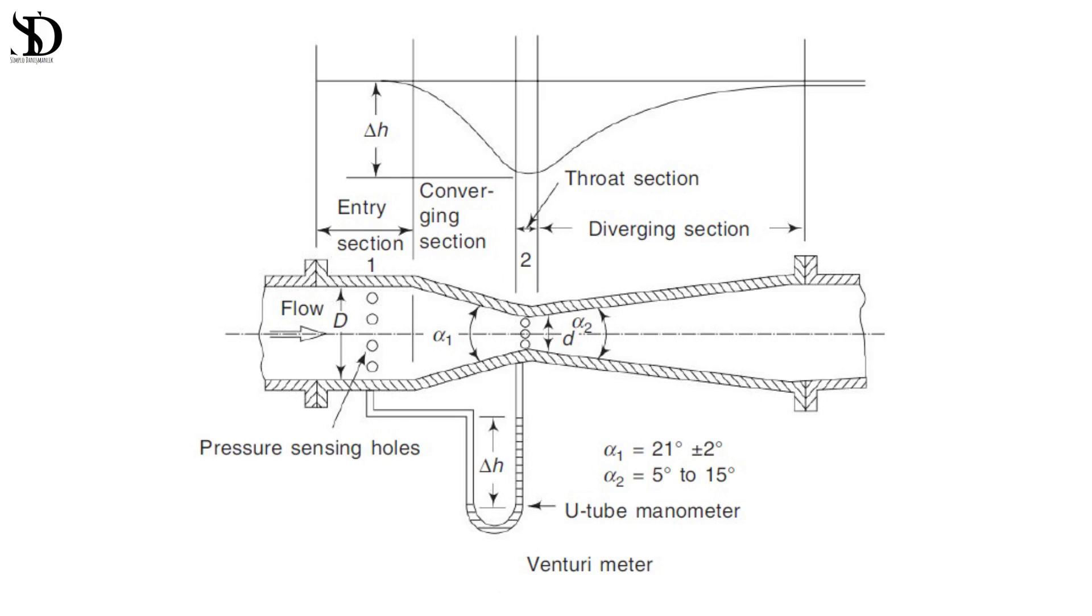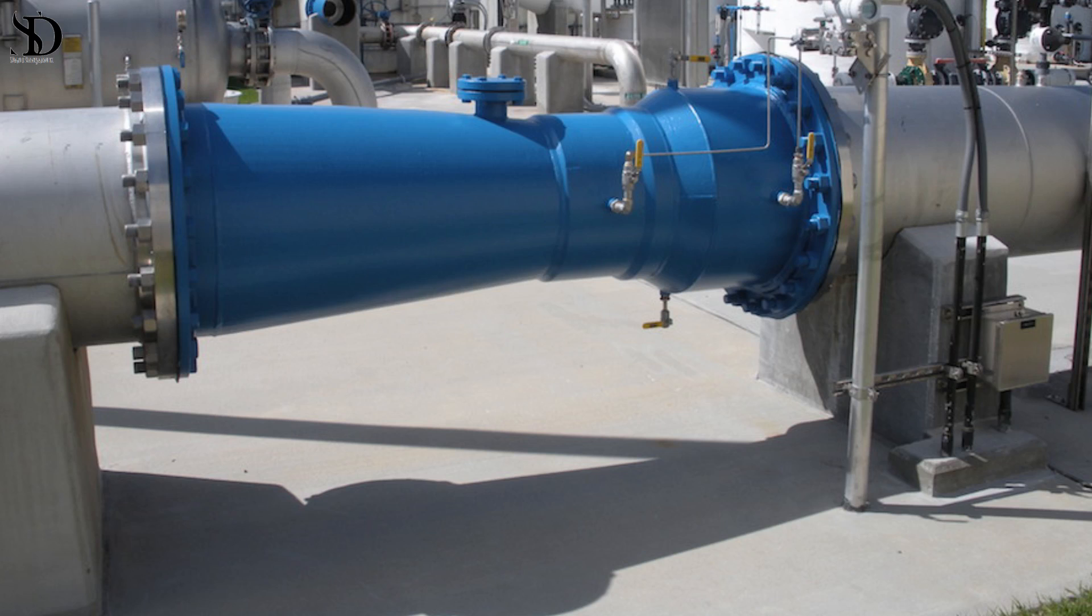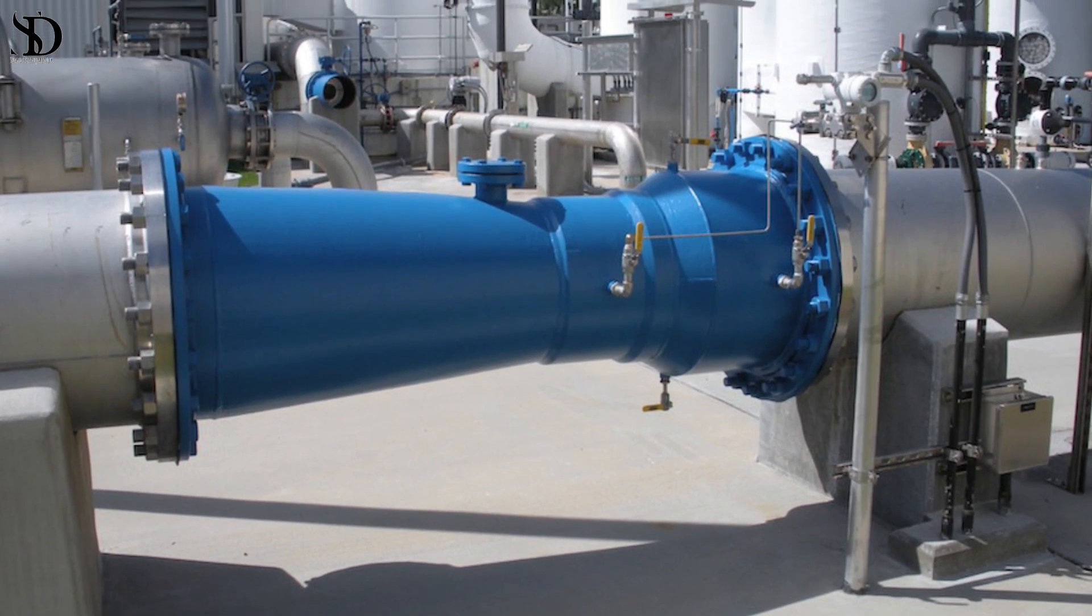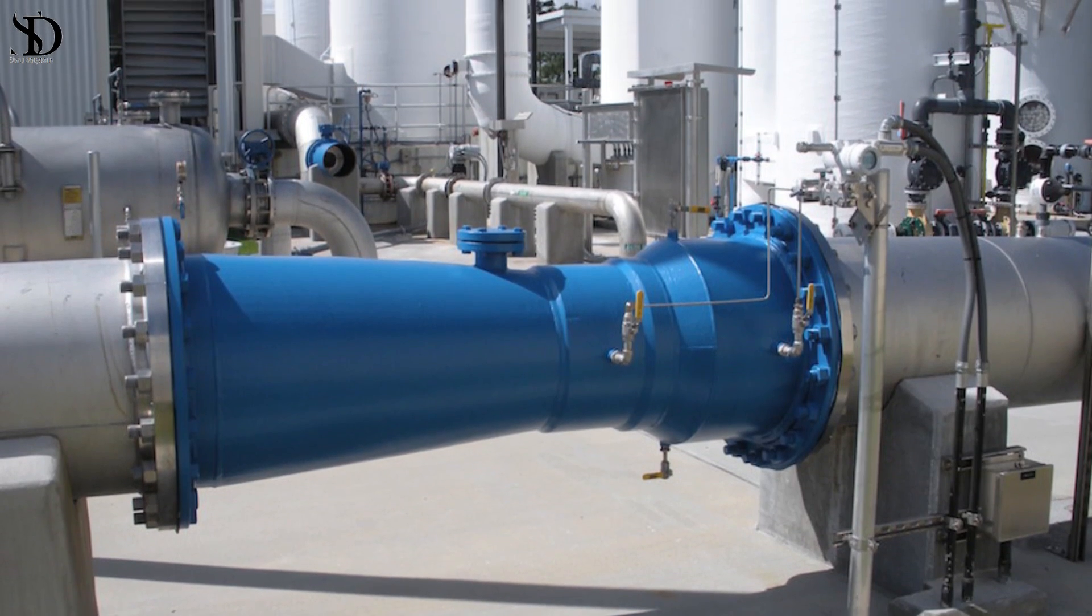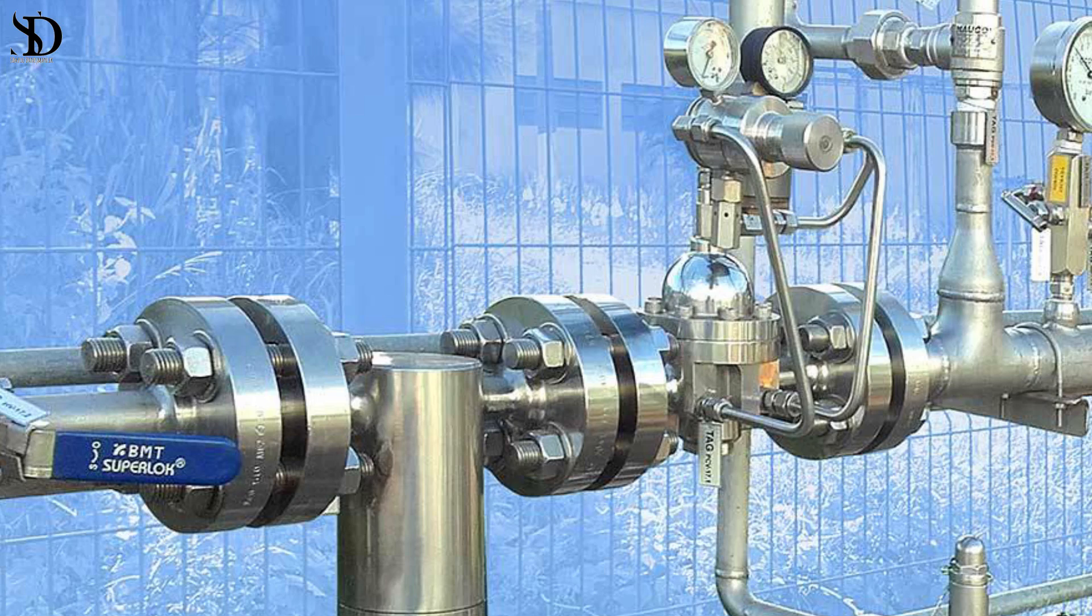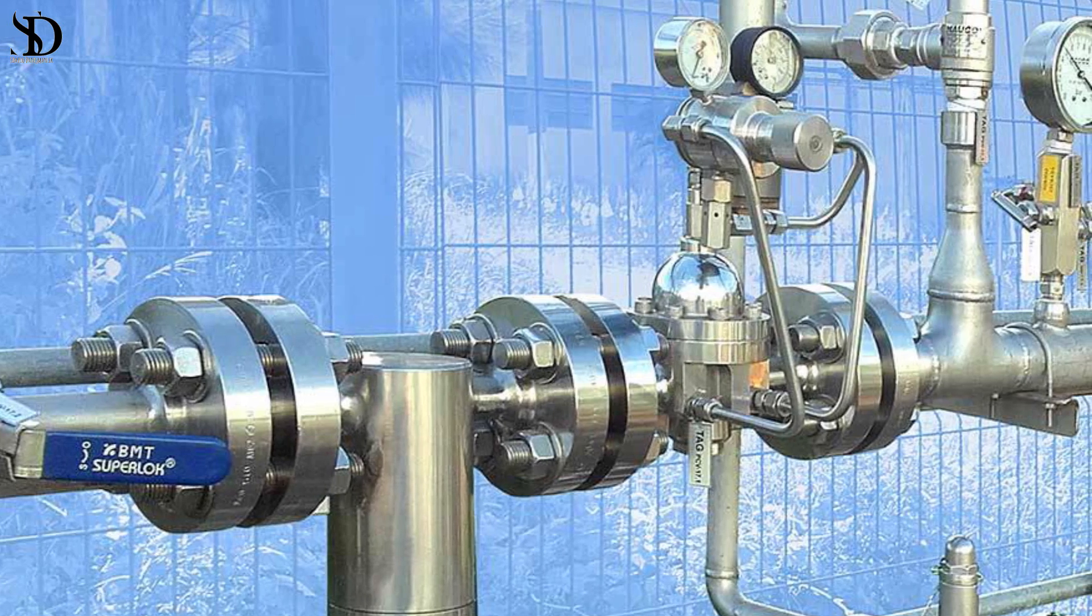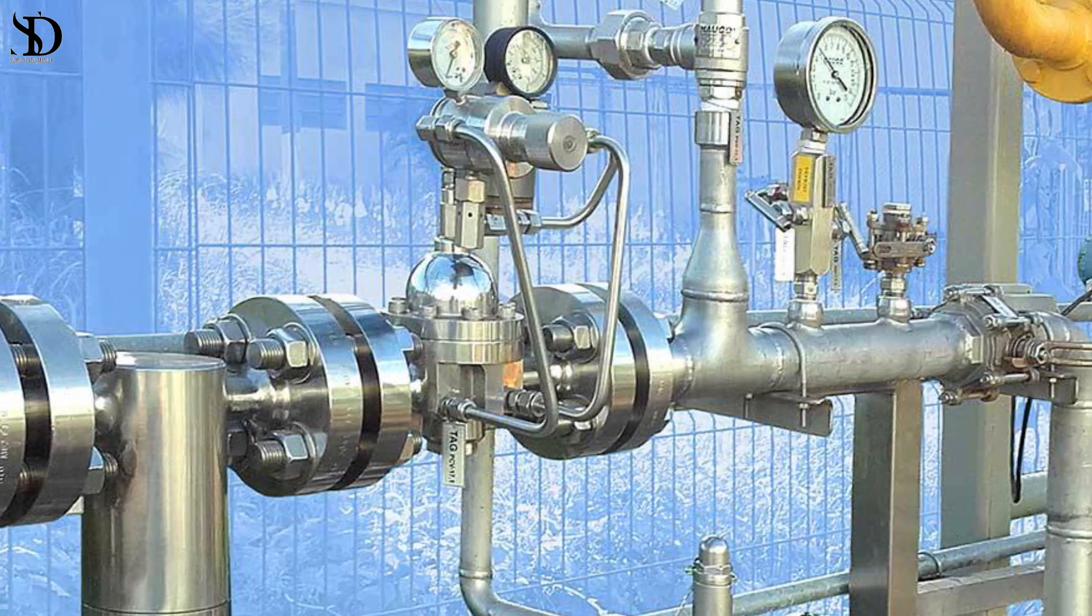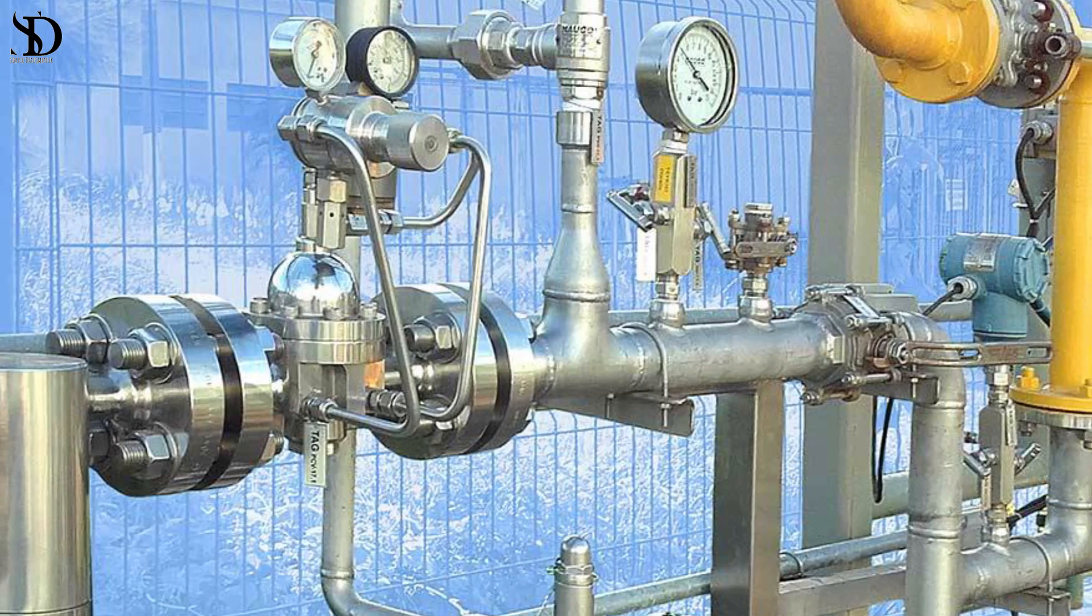Flow efficiency: venturi tubes offer enhanced accuracy due to their streamlined design, allowing for minimal pressure loss compared to orifice plates. Size and installation: venturi tubes require ample space for installation due to their structural design, making them less suitable for constrained spaces. These tubes are favored for applications requiring higher accuracy, such as in the measurement of clean liquids or gases, however their installation cost and space requirements might be higher compared to orifice plates.